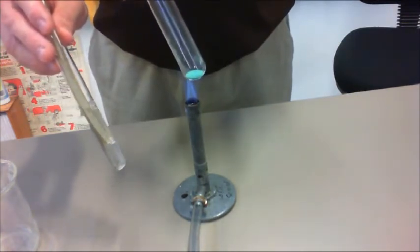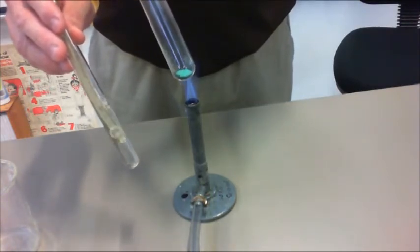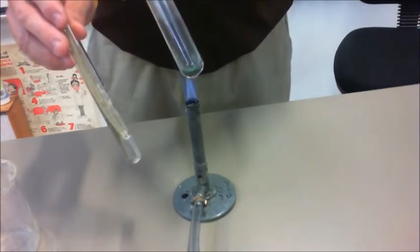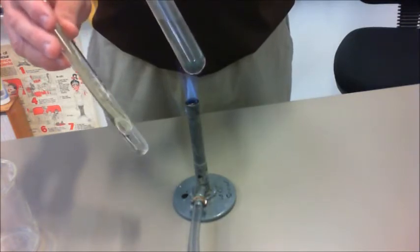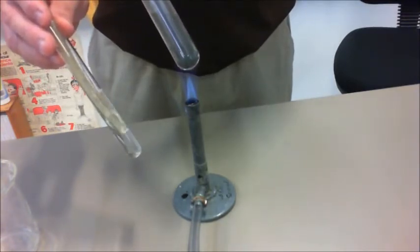Now, you can see straight away in there that it's starting to bubble, so that means that it's starting to produce gas. And also, you can see the copper carbonate is turning black inside the test tube.